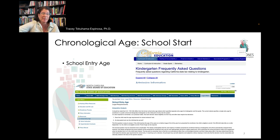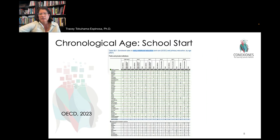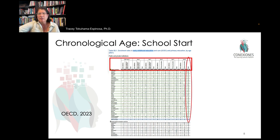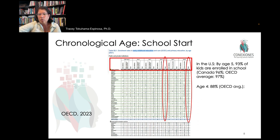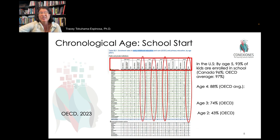Lousy early childhood education has no impact — what is really important is the quality of education. Looking at an international comparative view of school start ages, if you look at the OECD countries, pretty much by age five everyone goes to school. In the U.S. it's about 93% of kids; Canada, 96%; the OECD average is 97%. But clock it back — at age four only 88% are in school, age three only 74%, age two only 43%, and newborns only about 19%.